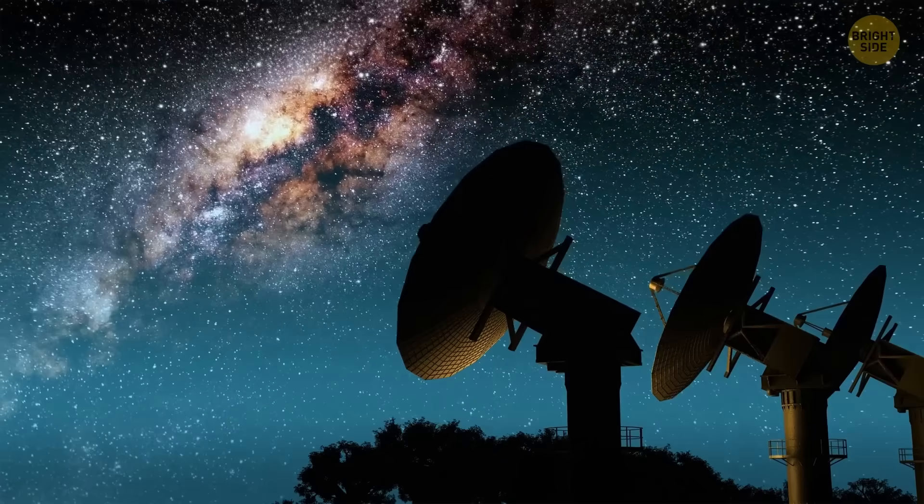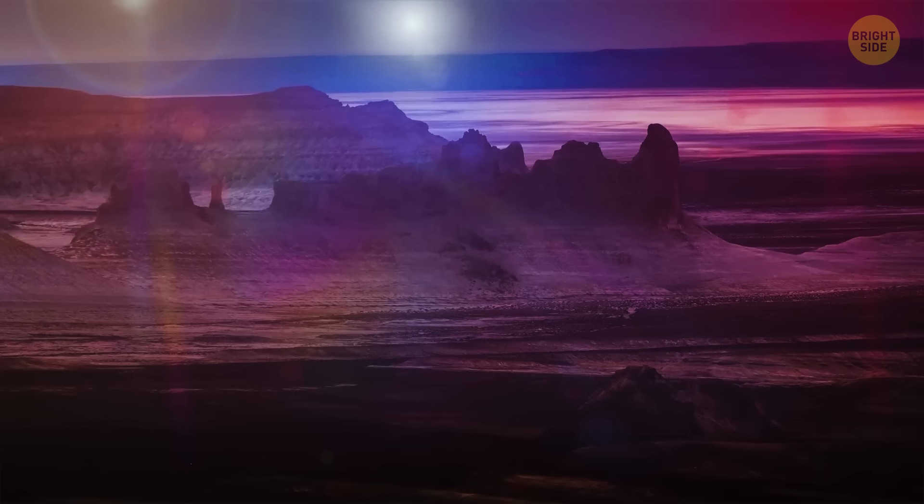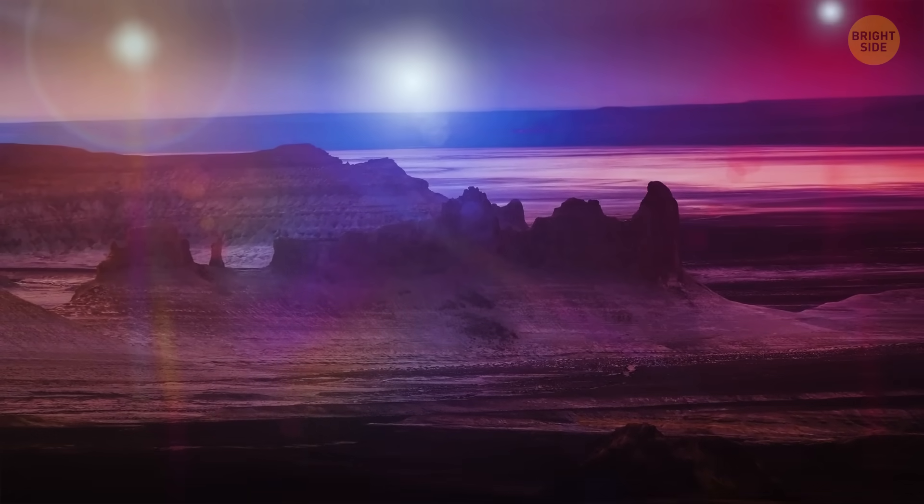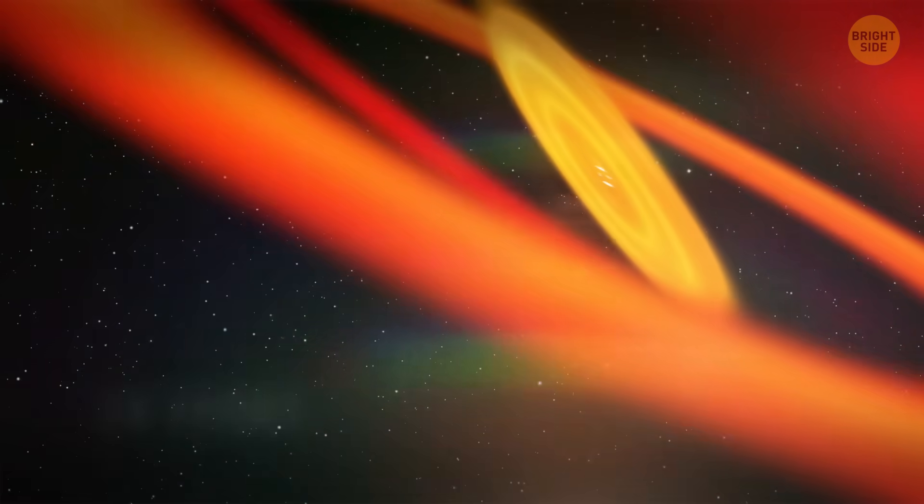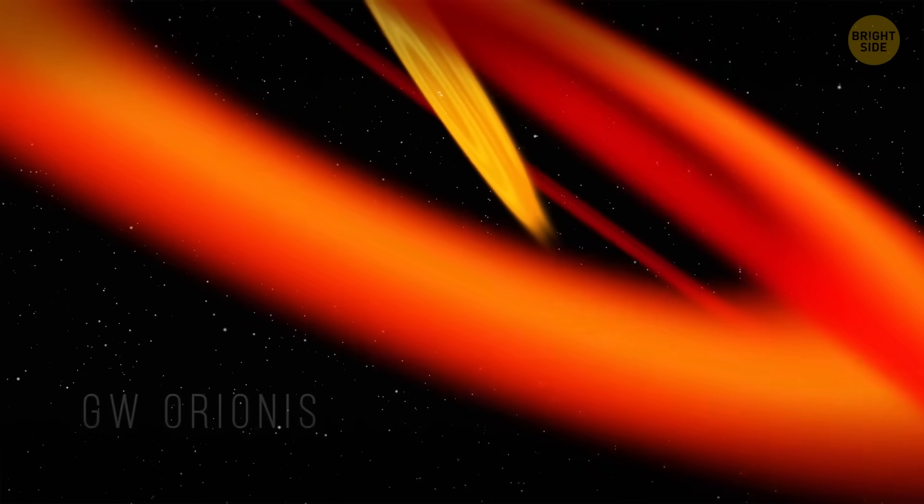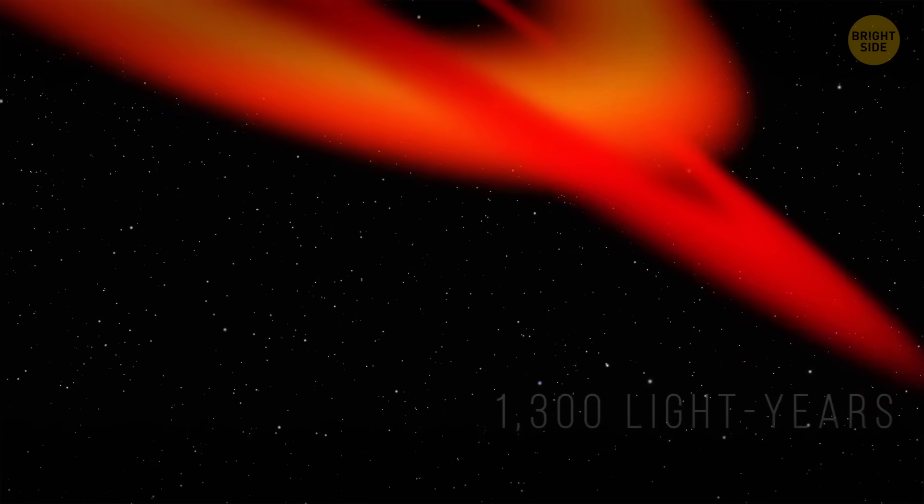But astronomers seem to have found something rarer and more bizarre. There might be a planet that orbits three stars at once. The GW Orionis star system is around 1,300 light-years away from our planet.